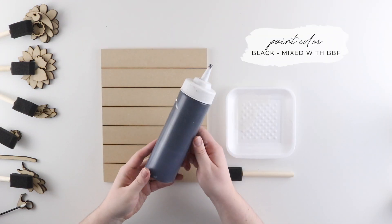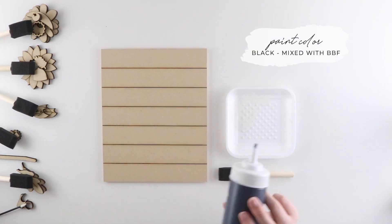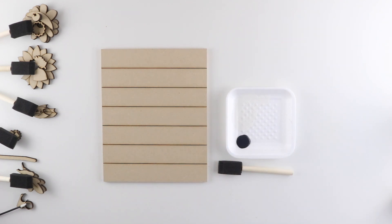On the shiplap insert I'm going to be using a black paint and a foam brush. Before I start painting I'm going to make sure that I have my tack handy to clean out the shiplap lines.